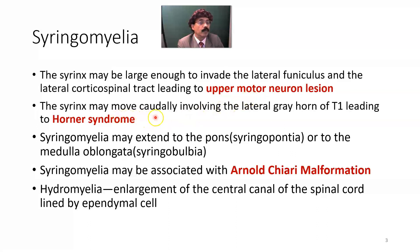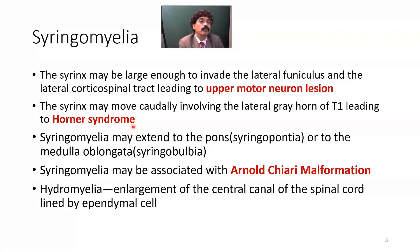The syrinx may move caudally and involve the lateral grey horn of T1, leading to Horner syndrome, because it may involve the sympathetic innervation to the head and neck region. Horner syndrome is characterized by ptosis — drooping of the upper eyelid — miosis, anhydrosis, and enophthalmos.